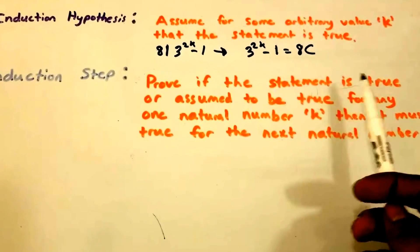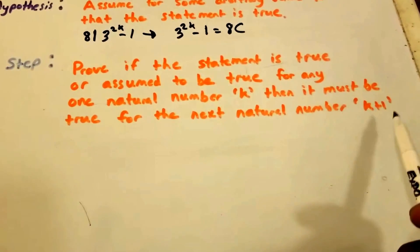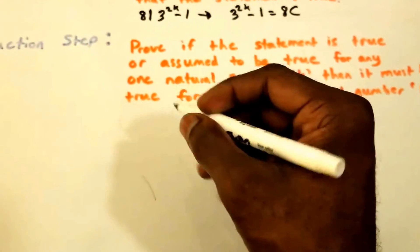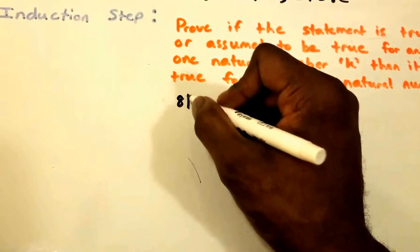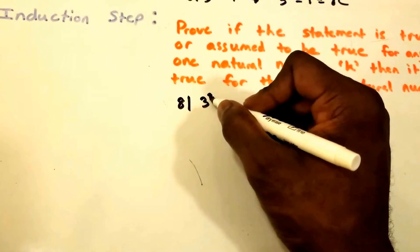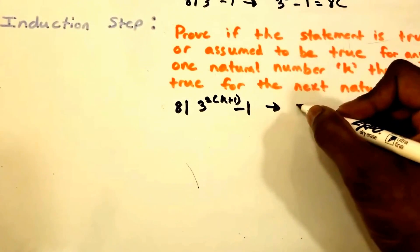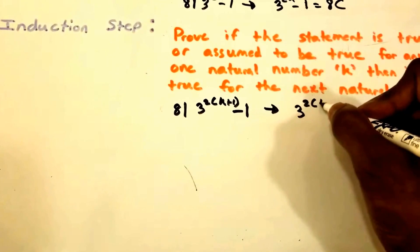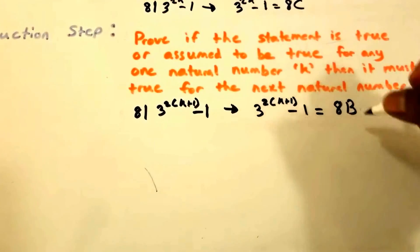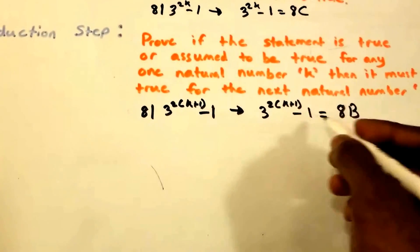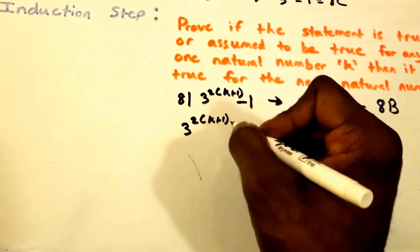We'll use this in our induction step. In our induction step we want to prove that if this statement is true for any one natural number K, then it must be true for the next natural number K plus 1. So what we want to show is that 8 divides 3 to the power of 2 times (K+1) minus 1, which implies that 3 to the power of 2(K+1) minus 1 equals 8 times some constant B.